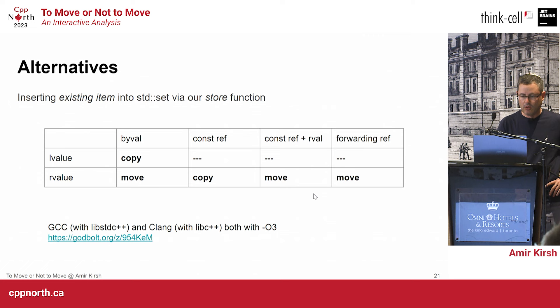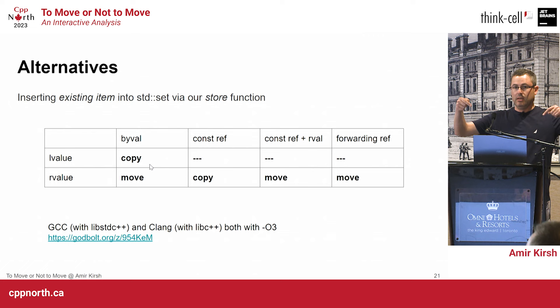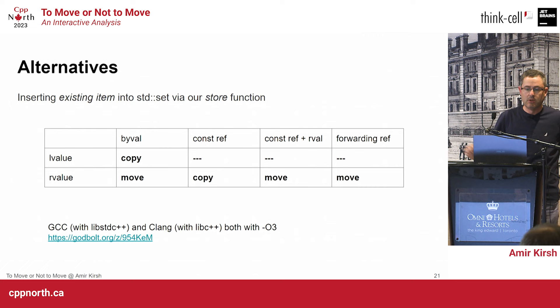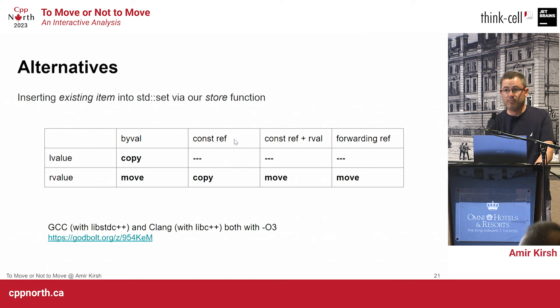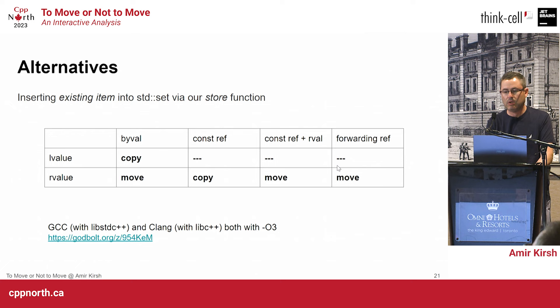Comparing the alternatives: by value — you pay for a copy for the lvalue case, even if the string was already in the set; by const ref — same problem for rvalues; by both overloads — you do only the move on the rvalue, and copy only when needed. There's a link showing the comparison of these cases, and ultimately you should go with the overloads or forwarding reference approach.